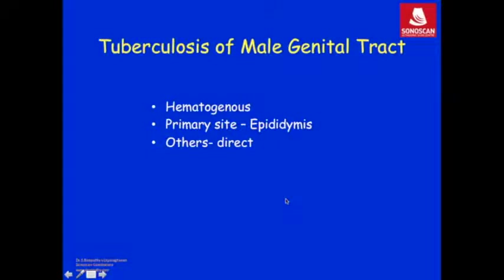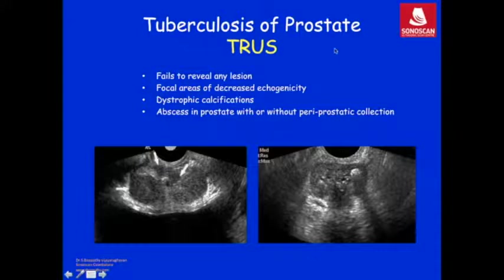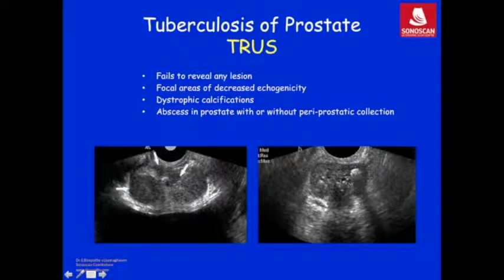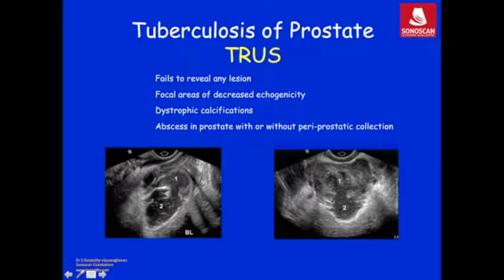Coming to tuberculosis of the male genital tract: the spread is by the hematogenous route and the primary site of involvement is the epididymis, with other regions infected by direct contiguous spread. For tuberculosis of the prostate, the investigation of choice is transrectal ultrasound. Many patients show no lesion on TRUS; others may have focal areas of decreased echogenicity, dystrophic calcifications, or rarely an abscess in the prostate that may extend beyond it — mimicking a non-specific prostatic abscess.